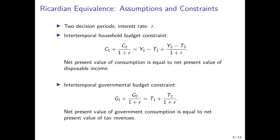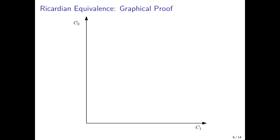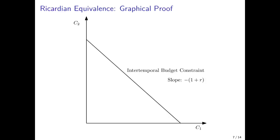We can illustrate this argument graphically using the budget constraints from the previous slide. We plot consumption today on the horizontal axis and consumption in the future on the vertical axis. We draw the intertemporal budget constraint, which has a slope of minus one plus R. For example, if we use all available resources for first-period consumption only, we end up at one endpoint; if we consume everything in the second period, we end up at the other. Any combination along this constraint is feasible, since we can shift consumption intertemporally at the interest rate R.